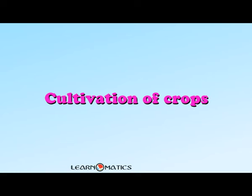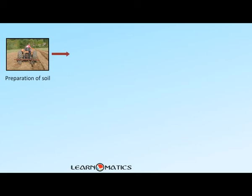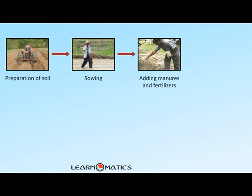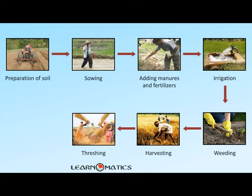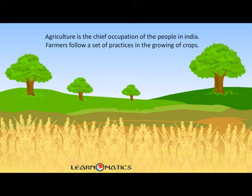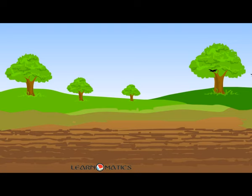The cultivation of crops involves the following steps: 1) preparation of soil, 2) sowing of seeds, 3) adding manures and fertilizers, 4) irrigation, 5) weeding, 6) harvesting, 7) threshing, and 8) storage. Agriculture is the chief occupation of people in India. Farmers follow a set of practices in growing crops.